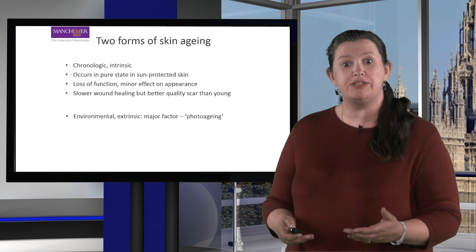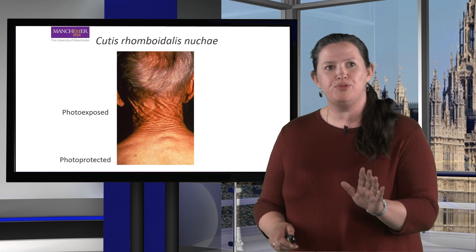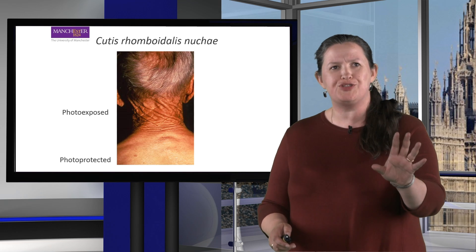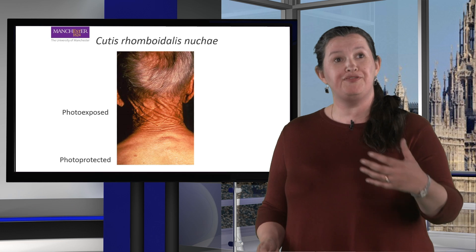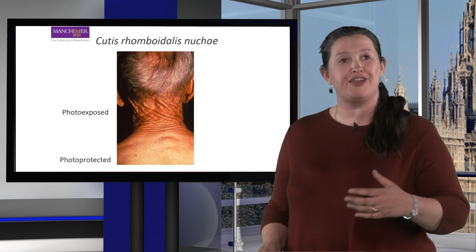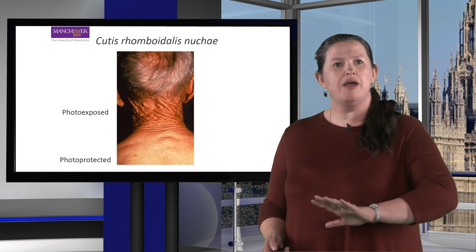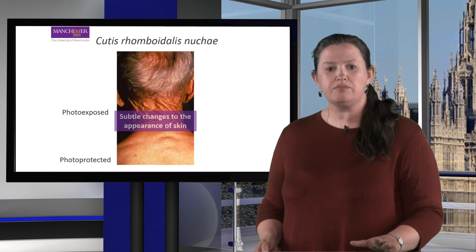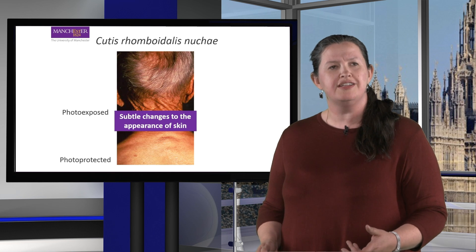This is a very clinical photograph. What it shows is the difference between sun exposed and sun protected skin in a Manchester man — which proves we do have sun in Manchester. Above his collar line we have thick rigid wrinkles, but below the collar line the skin is very smooth and blemish free. What you see with intrinsic aging is very subtle changes to the appearance of skin.